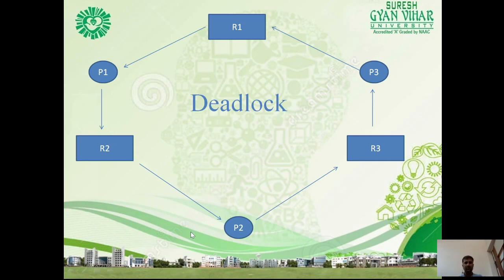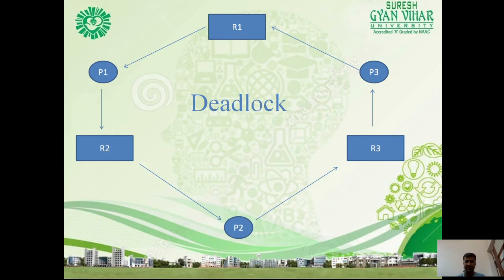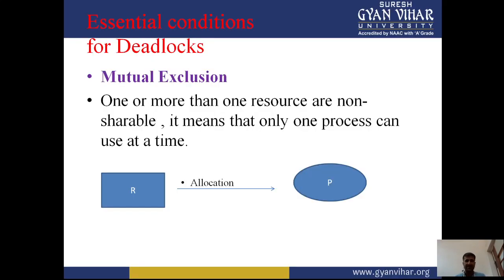In this diagram, P1 requires resource R2, but R2 is assigned to P2. P2 requires R3, but R3 is reserved for P3. P3 requires R1, but R1 is allocated to P1. So R1 is allocated to P1 but P1 needs R2; R2 is allocated to P2 but P2 requires R3; R3 is allocated to P3 but P3 requires R1. This is the basic structure showing deadlock.